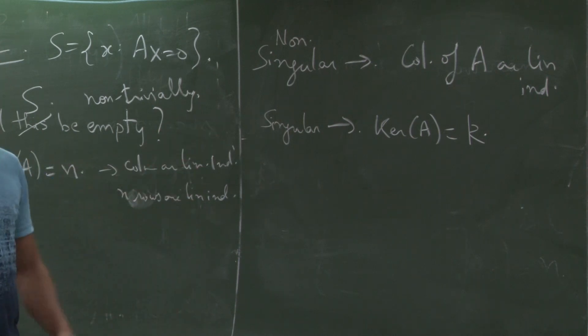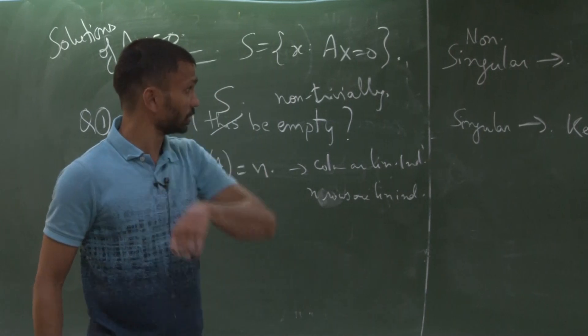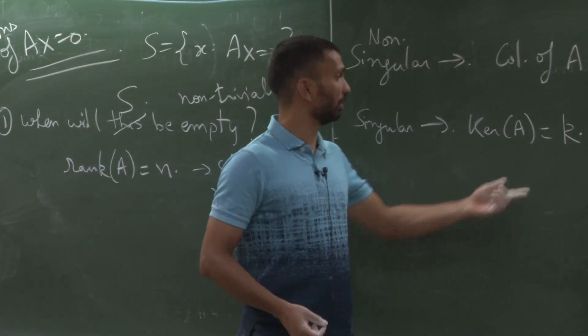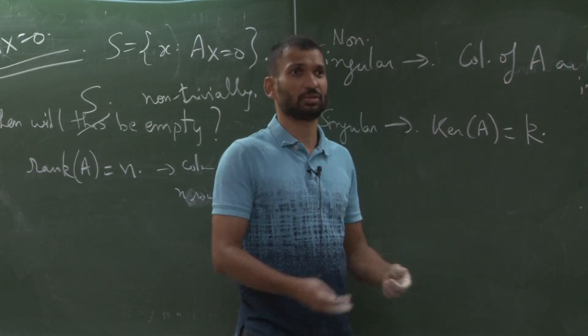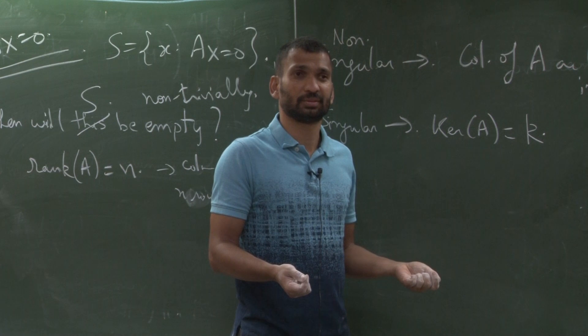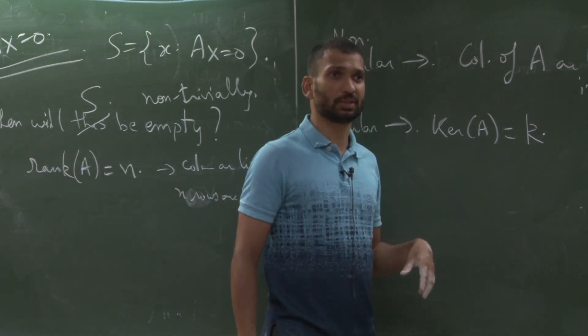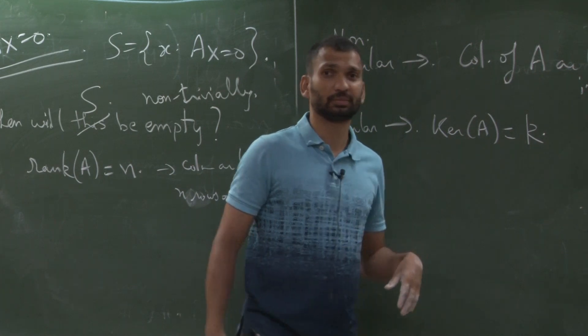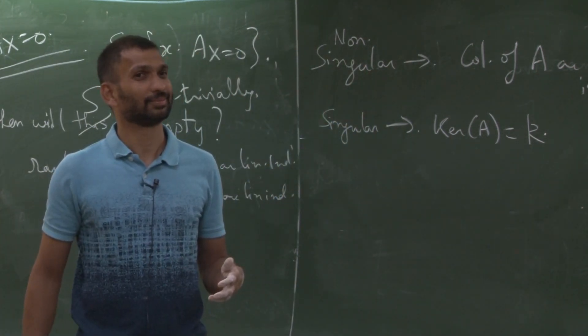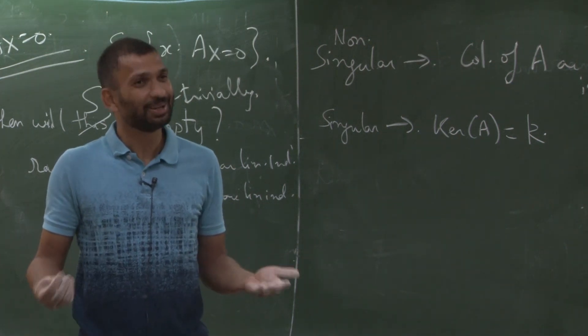But how do we find these solutions? So we have to describe a vector space whose dimension is k. So we want to find a basis which has k elements. How? How do I describe this vector space? The answer is Gaussian elimination.